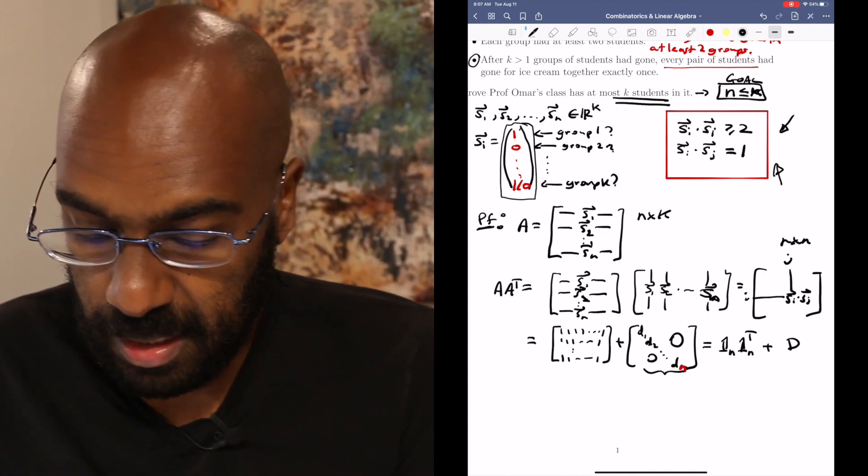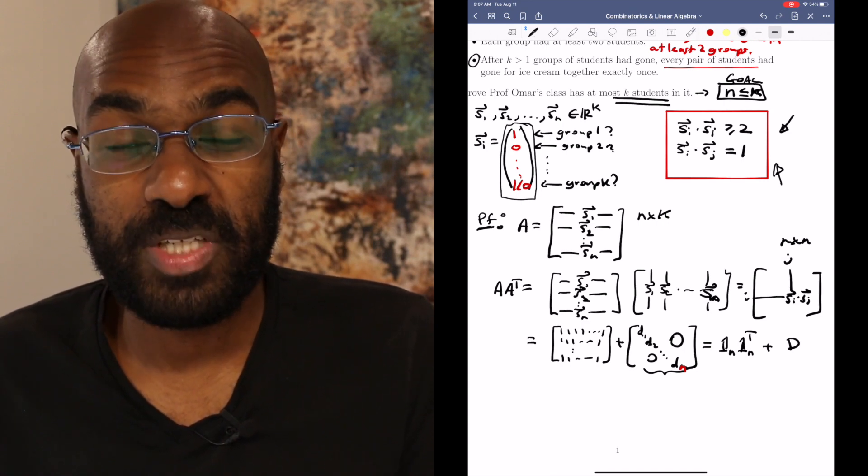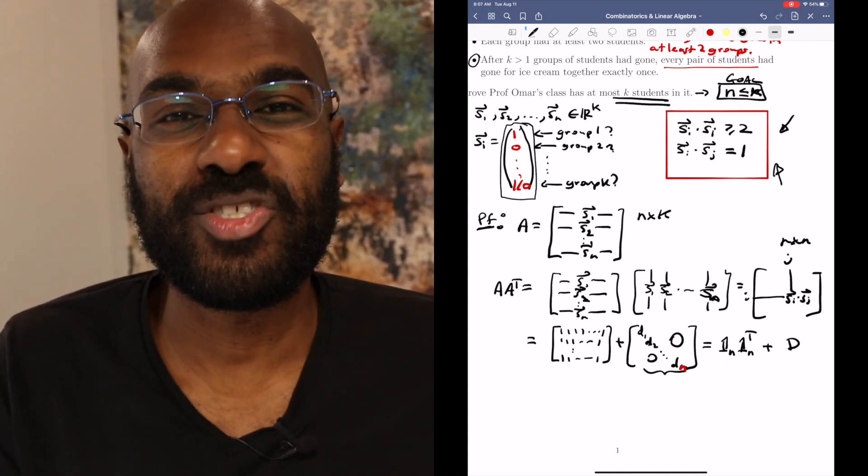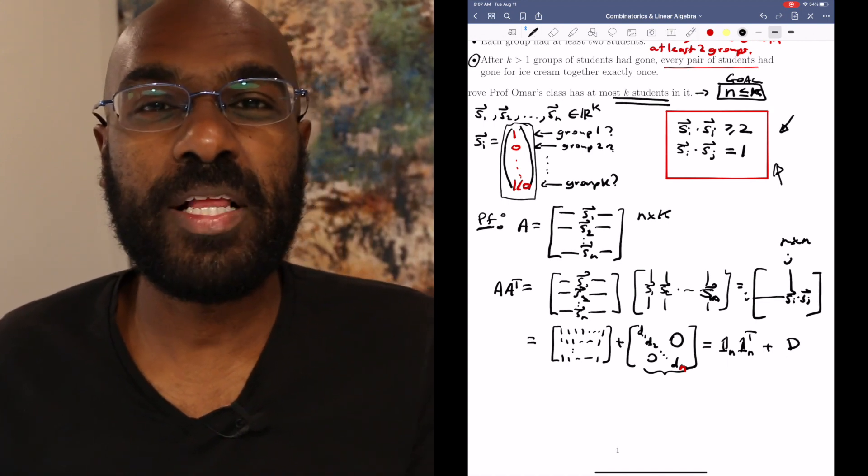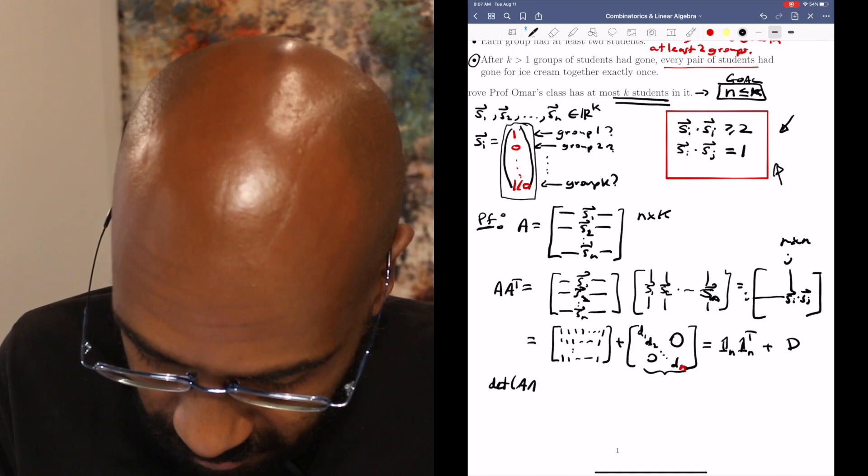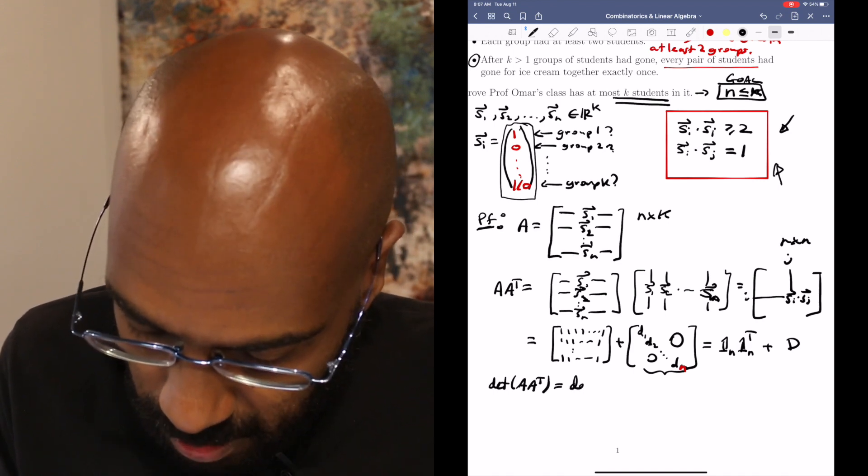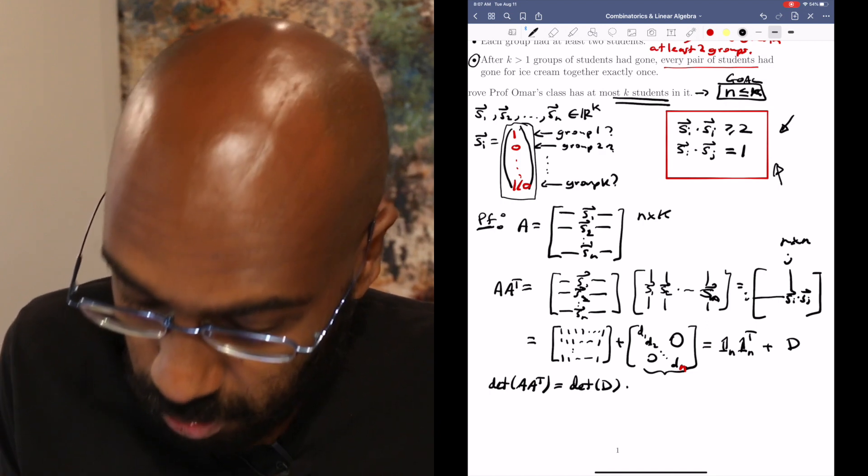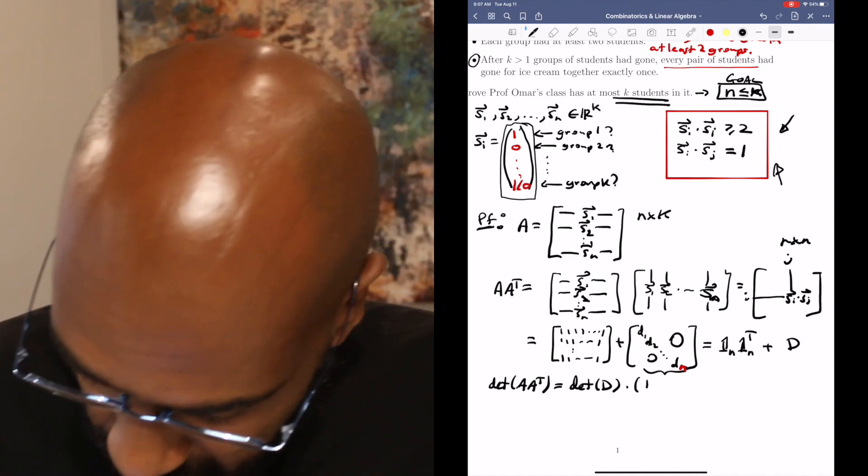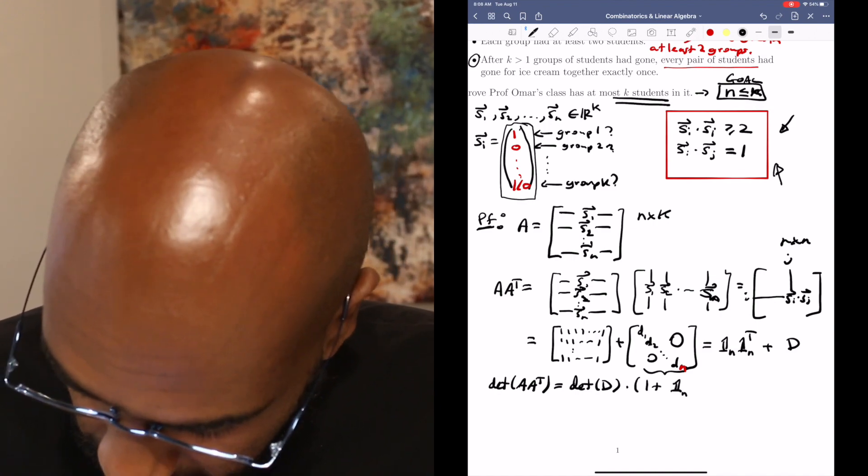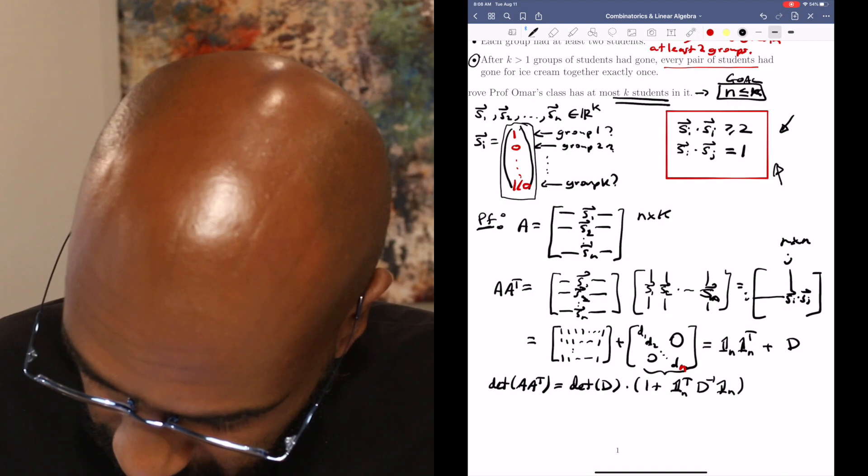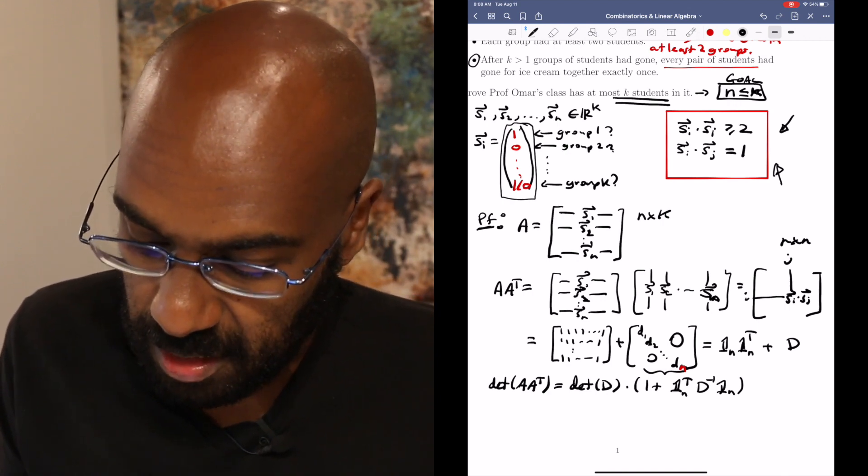Okay, now we'll actually be able to prove that AA transpose is invertible as a consequence of this, and the reason is we can use the matrix determinant lemma which we actually developed in a different video which is linked right up here. And it says that the determinant of this matrix AA transpose is equal to the determinant of the matrix D, which is invertible because D is a diagonal matrix with positive entries on its diagonal, times one plus the matrix of all ones transpose times the inverse of D times the matrix of all ones.